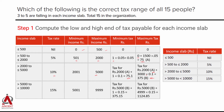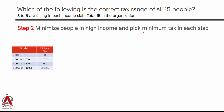Slab 4: income greater than 5000 and less than 10000, with 15% incremental tax. Minimum income is 5001: tax on first 5000 is B = 375, plus 15% on 1 rupee = 15 paise, so minimum tax = 375.15 rupees. Maximum income is 9999: 375 plus 15% on 4999 = 749.85, giving maximum tax of 1124.85 rupees. This completes the minimum and maximum tax columns for all slabs.